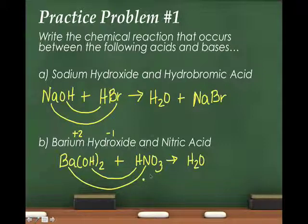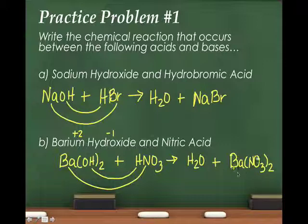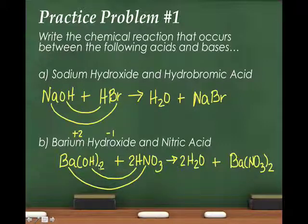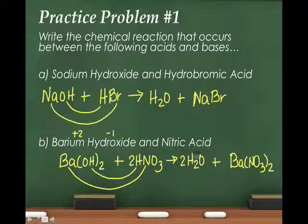It's still water as one product, and then I put the barium with the nitrate. Nitrate is -1, so I need two nitrates with the barium — that's the salt. To balance, I put a 2 in front of the water. Now I have two hydrogens plus two hydrogens, which is four hydrogens, and two oxygens — that makes two waters. So remember: with acid-base reactions, water is always one product, and the other product is called a salt.